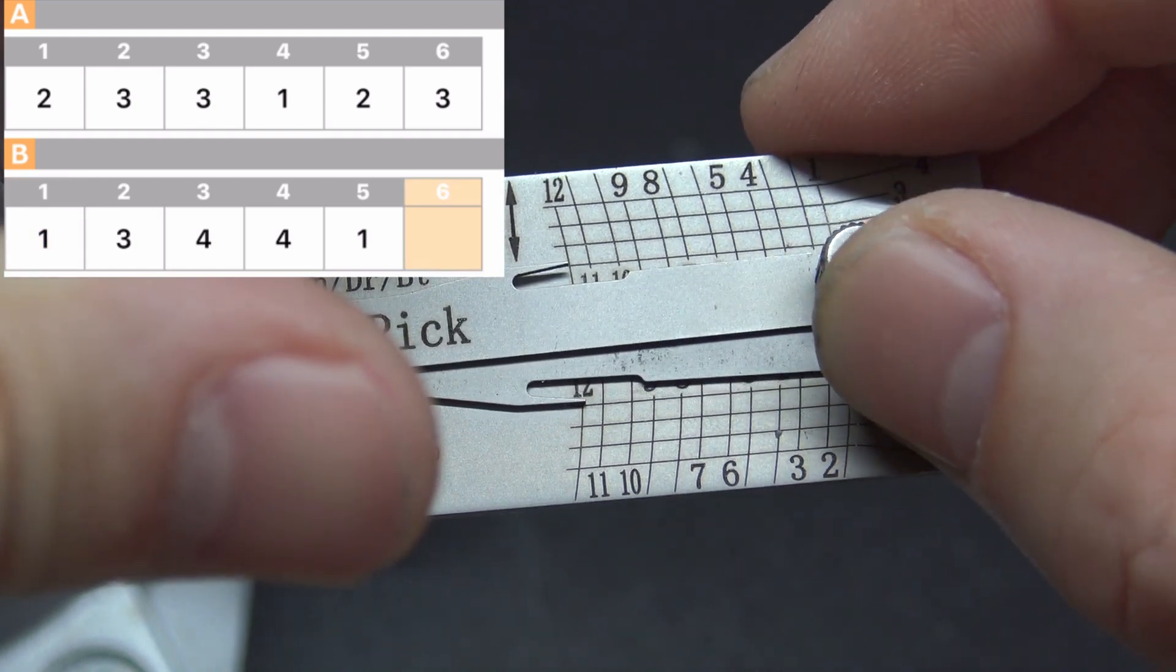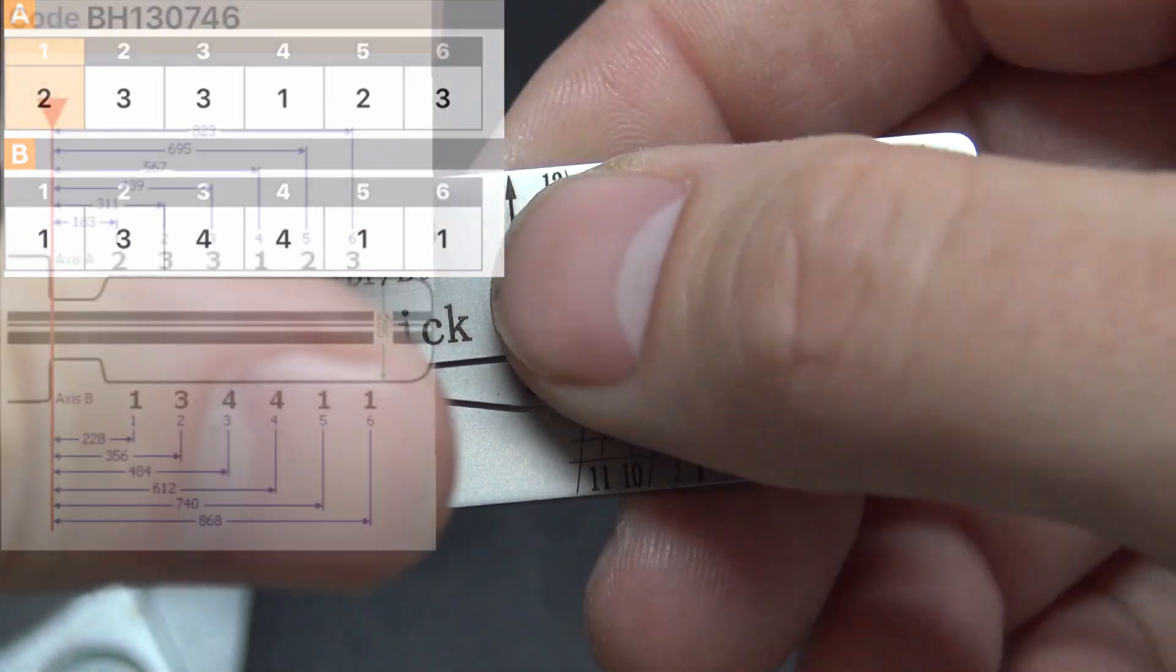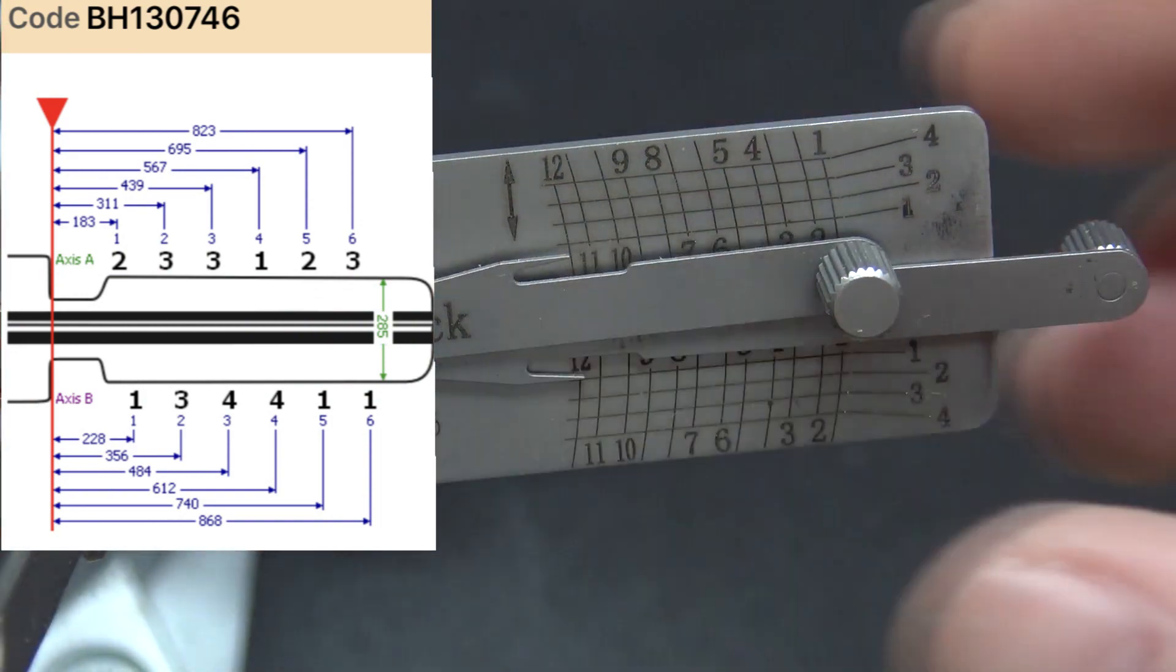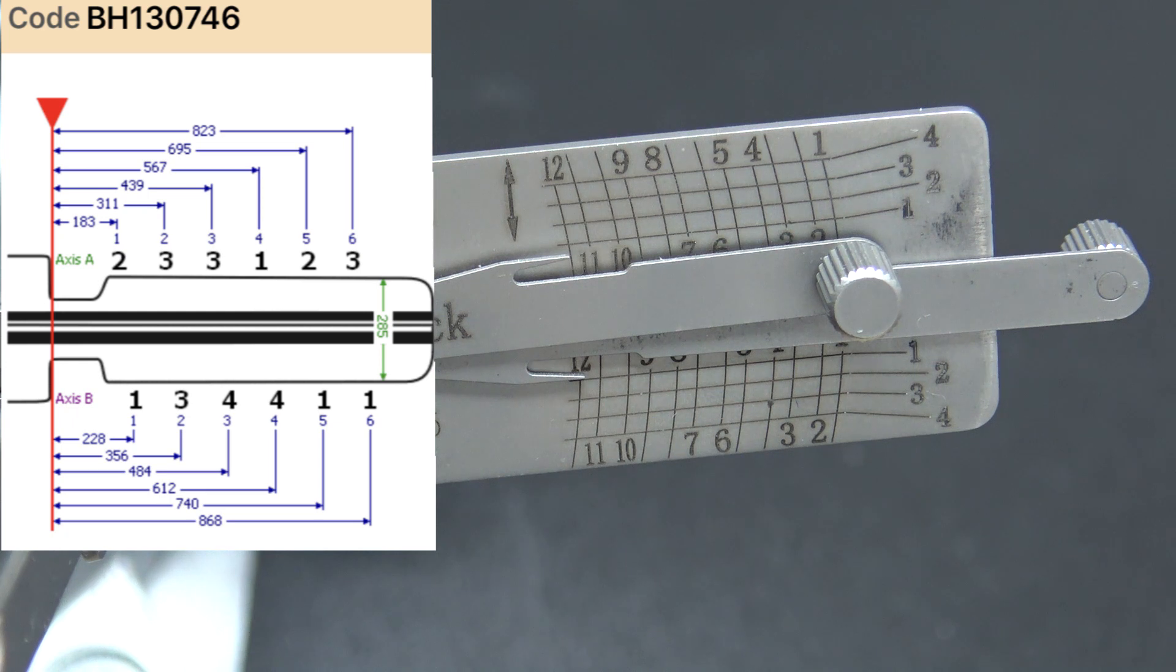And last but not least, you have twelve which is a one. So that gives us a bitting here on our A track as we see is two, three, three, one, two, three, and our B track of one, three, four, four, one, one.